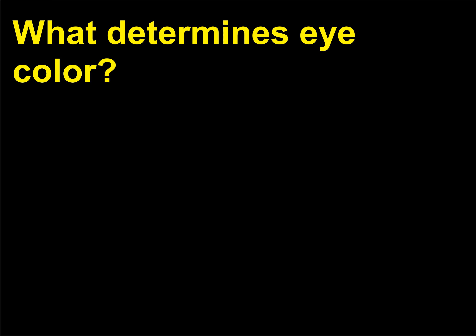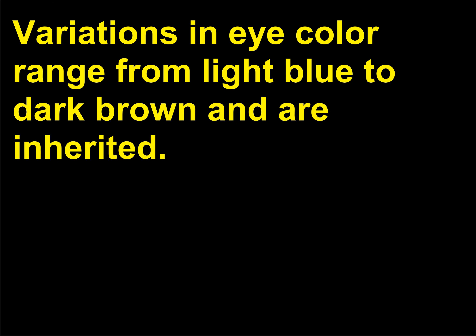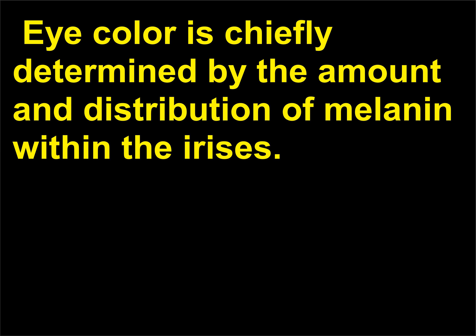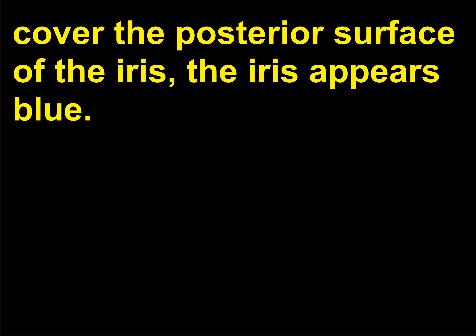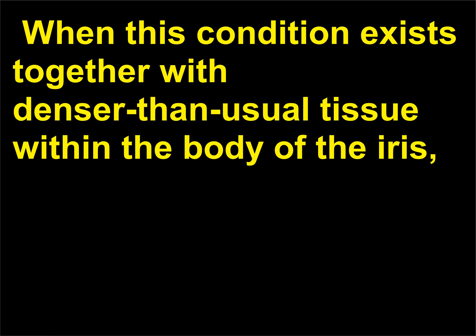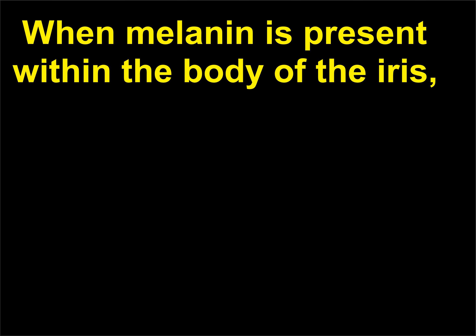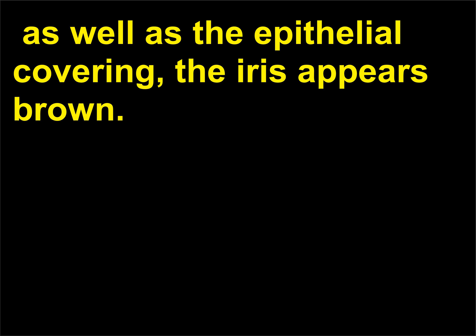What determines eye color? Variations in eye color range from light blue to dark brown and are inherited. Eye color is chiefly determined by the amount and distribution of melanin within the irises. If melanin is present only in the epithelial cells covering the posterior surface of the iris, the iris appears blue. When this condition exists together with denser-than-usual tissue within the body of the iris, the eye color looks gray. When melanin is present within the body of the iris as well as the epithelial covering, the iris appears brown.